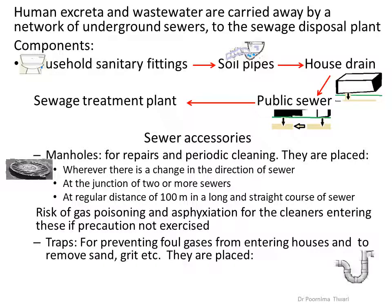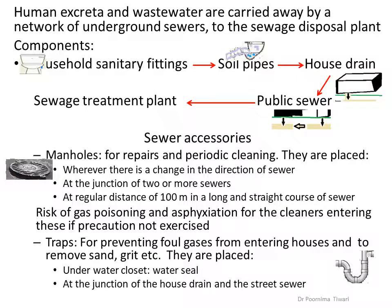Another sewer accessory is traps. The purpose of traps is to prevent foul gases from entering houses or streets and to retain sand, grit, etc. from sewage. Traps are placed at the water closet in household fittings, at the junction of the house drain and street sewer, and where surface water enters the sewers if storm water is also carried by sewers.